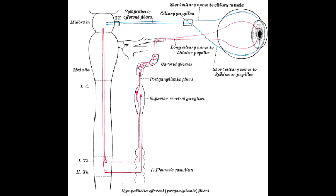Describe the first order neuron for mydriasis. The first order neuron goes from the hypothalamus to the ciliospinal center of Budge at the level of C8 to T2.